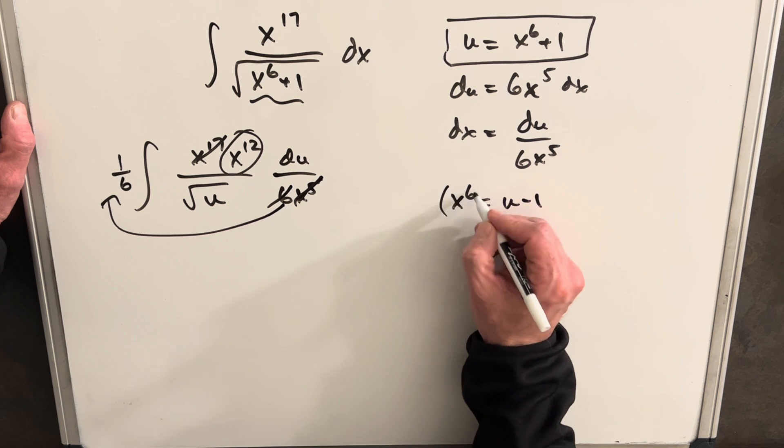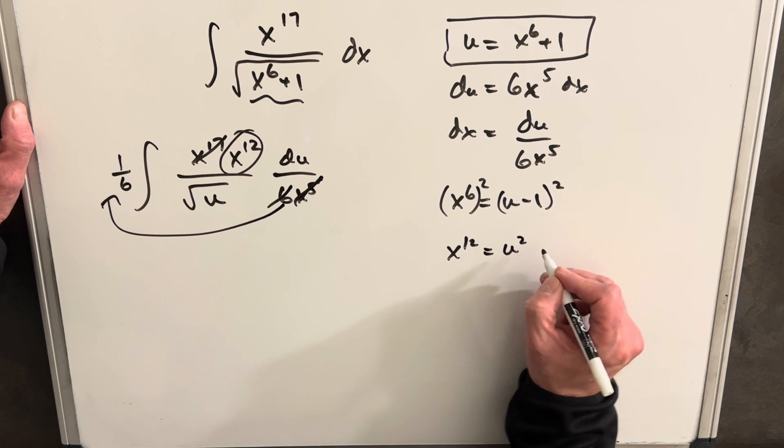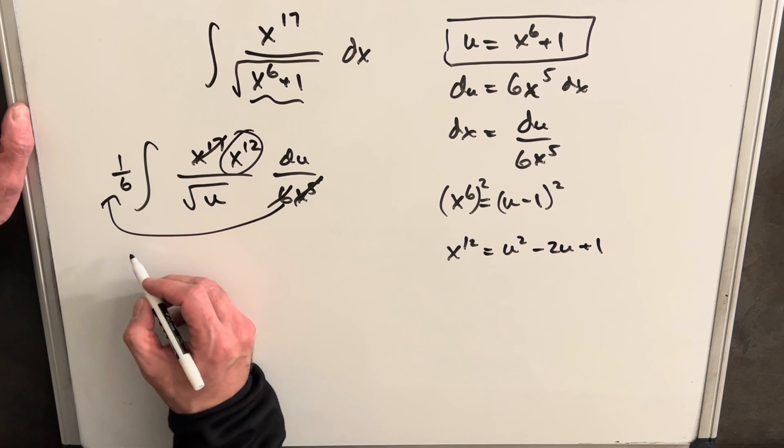So then if we square both sides, then x to the 12th is just u squared minus 2u plus 1, and we'll use that, and we'll rewrite this.